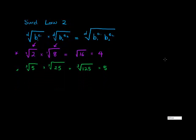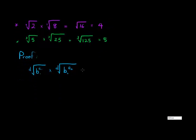Now, why is this law true? Why is it true that I can do this? Well, let me quickly do a proof. If I have the d-th root of a base and an exponent 1, and I multiply it with the d-th root of another base, base 2, with a different or the same, doesn't matter, exponent,